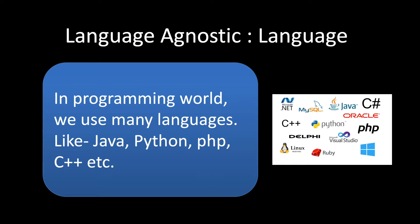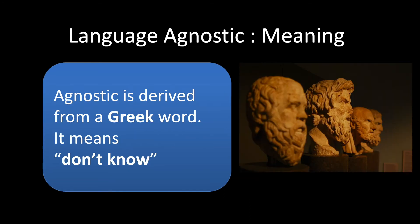Let's go a little deeper into the history. The word agnostic is derived from a Greek word meaning 'don't know.' It means that if you are solving something, your solution doesn't know which language it is going to use. If you are proposing an algorithm, your algorithm doesn't know what language it is going to use.